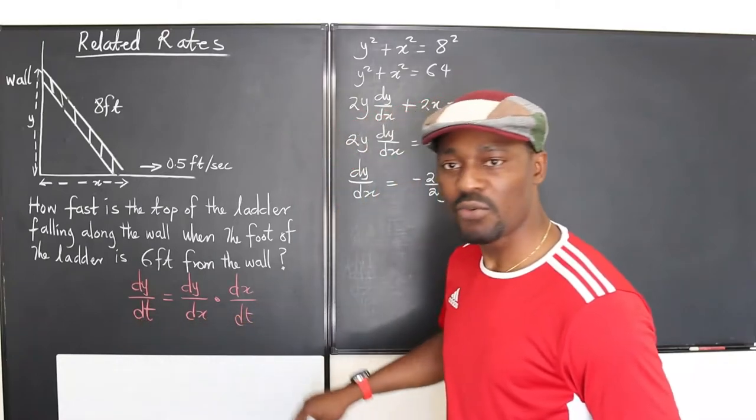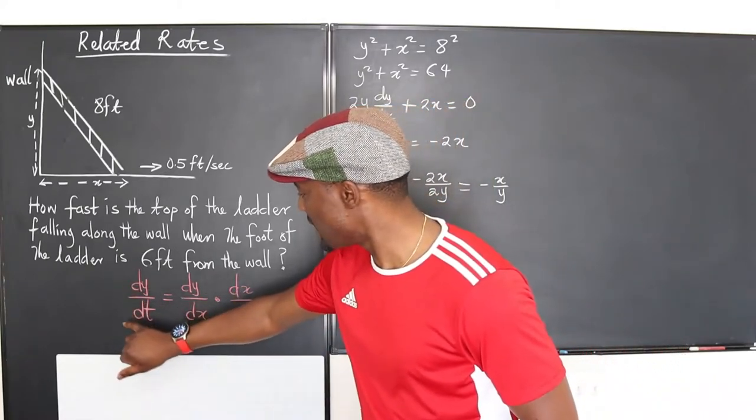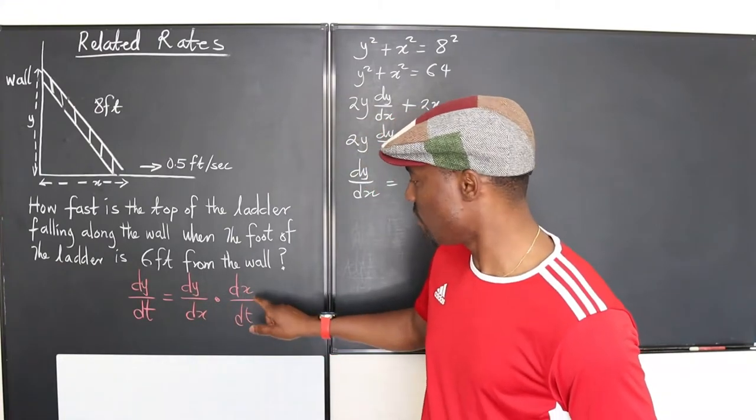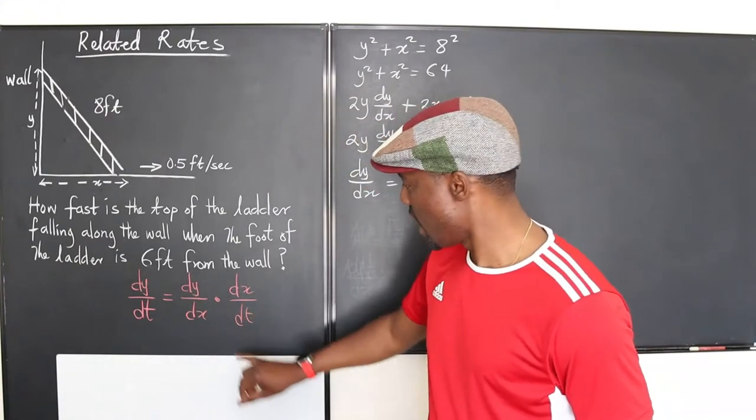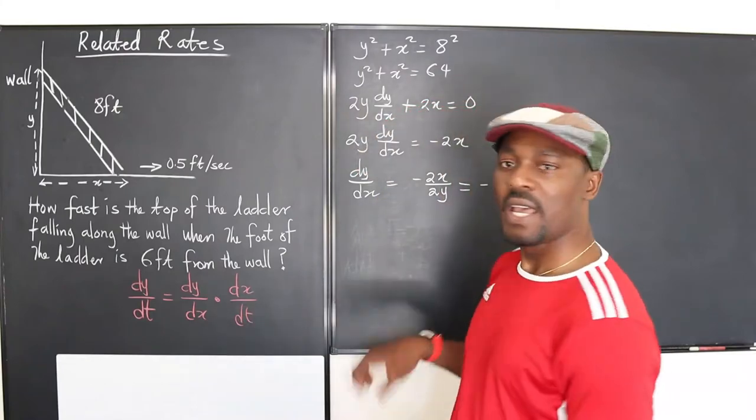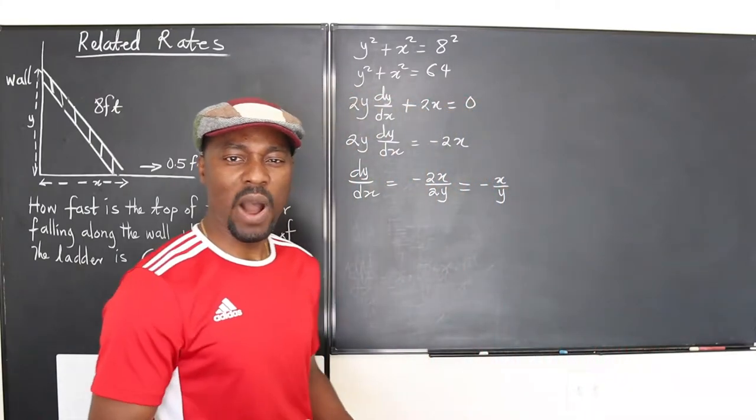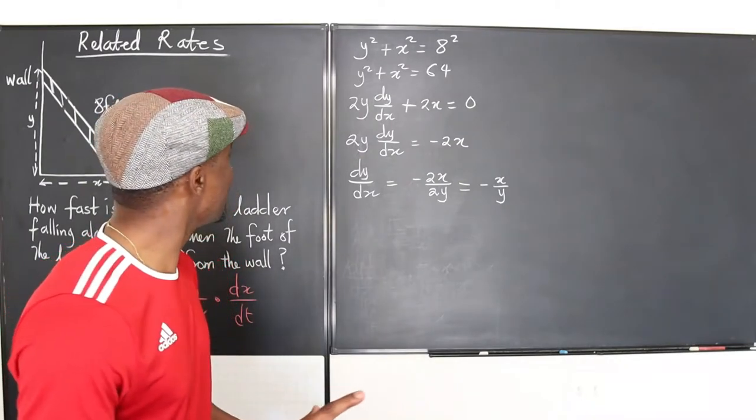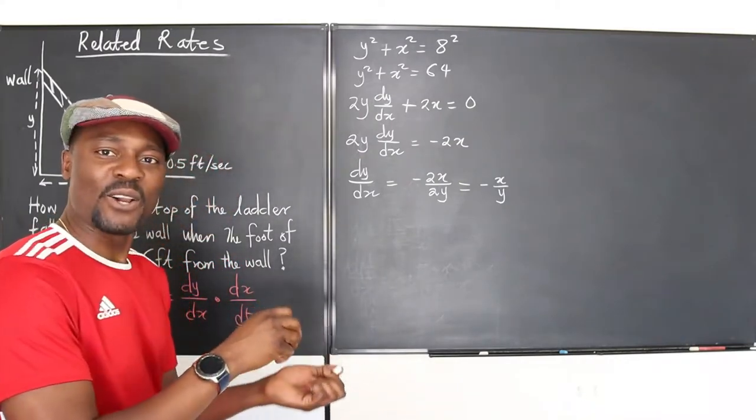You see that we can come back here and rewrite our equation and say dy/dt, which is what we're looking for, is dy/dx times dx/dt. We already know what dx/dt is. What is dy/dx? Oh, it's right there—it's negative x over y. What will x over y be? Let's do some little calculations here.